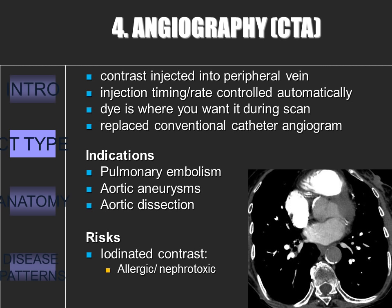CTA is a CT where iodinated contrast is injected into a small peripheral vein, with an automatic injector controlling the timing and rate of injection. It is safer, more efficient, and cost-effective than conventional catheter angiography, and has essentially replaced it. Accurate 3D casts of blood vessels can be made on the computer, offering much better detail than MRI or ultrasound. In PE, the scan is timed so contrast is in the pulmonary artery during the scan. Risks include allergic reaction to the dye and nephrotoxicity.